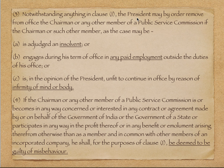Clause 3 के अनुसार: notwithstanding anything in Clause 1, the president may by order remove from the office chairman or any other member of public service commission। Misbehavior के अलावा तीन ऐसी conditions हैं जिनके basis पर president remove कर सकता है: (A) अगर कोई adjudged insolvent हो जाए यानी bankrupt हो जाए, (B) अगर mentally या bodily ill हो जाए, (C) तीसरी condition भी है। ये सभी — whether State PSC or UPSC — पर apply होती हैं।